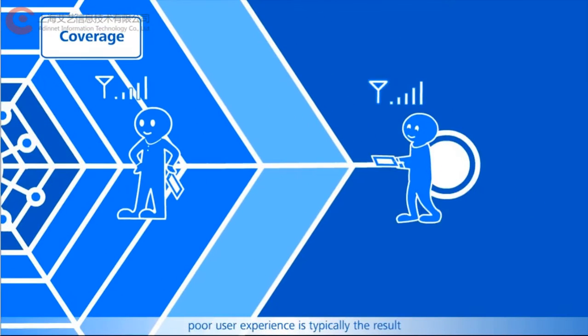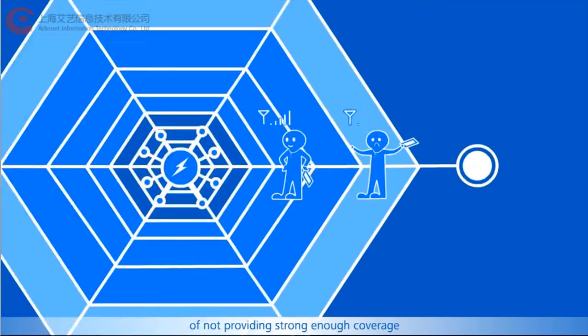At the cell edge, poor user experience is typically the result of not providing strong enough coverage.